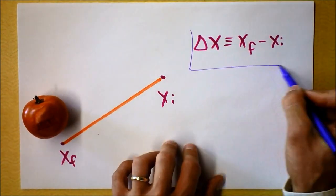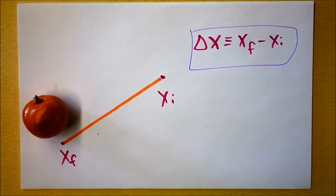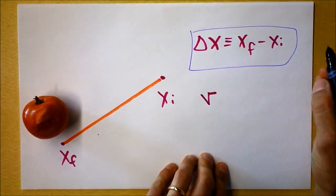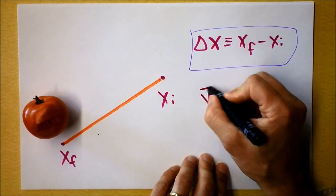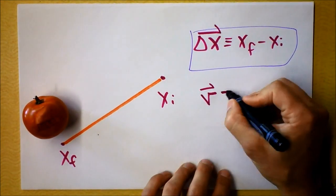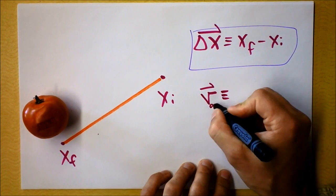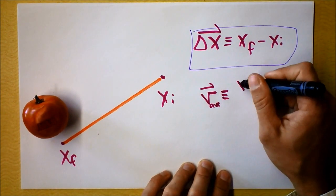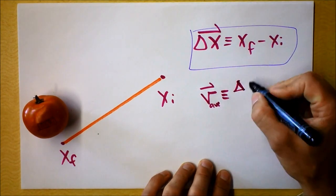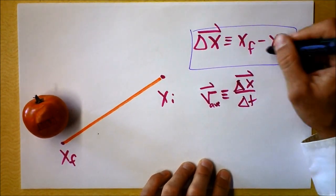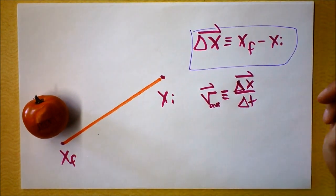In physics, we're really often interested in this concept of displacement. Displacement gives us something called velocity. Velocity is a vector, and so is displacement. Average velocity — let me be careful to say average velocity — is delta x divided by delta t. That's the definition right there.